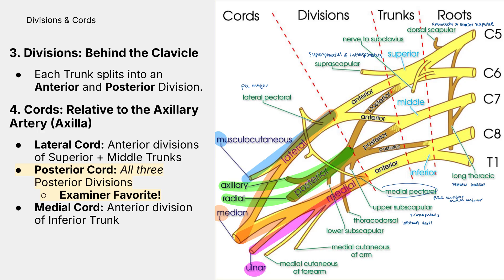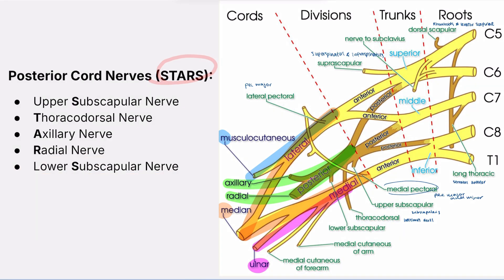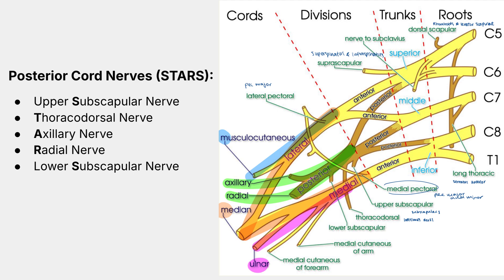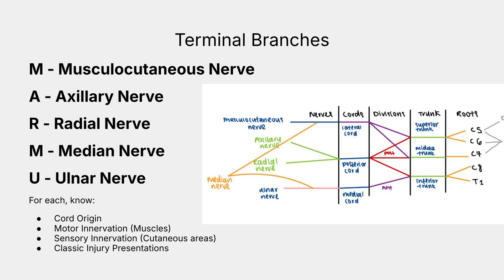The posterior cord mnemonic is STARS. It consists of the upper subscapular nerve, thoracodorsal nerve, axillary nerve, radial nerve, and lower subscapular nerve. These are the big five major terminal branches of the brachial plexus. For each of these nerves, you absolutely must know their cord origin, the muscles they innervate, their sensory distribution, and their classic injury presentations. An examiner can point at a muscle and ask for its nerve supply, then ask what might happen if it's damaged, or describe a sensory loss and ask for the affected nerve.